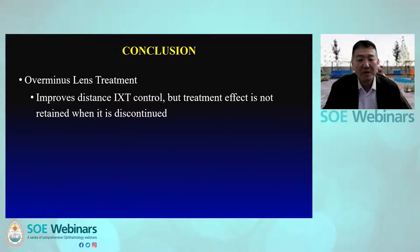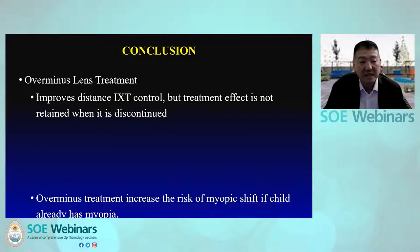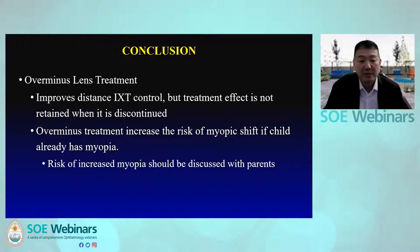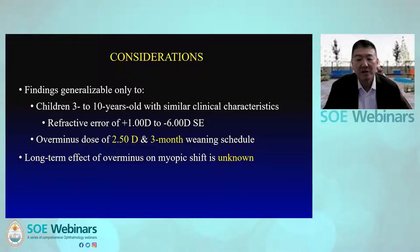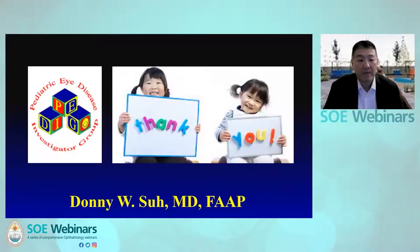In conclusion, over-minus lens treatment improves distance IXT control but the treatment effect is not retained once discontinued, and over-minus treatment significantly increased the risk of myopic shift if the child already had baseline myopia. The risk of increased myopia should be discussed with parents if over-minus correction is being considered. However, findings can only be generalized to children ages 3 to 10 sharing similar clinical characteristics as our cohort, using the same over-minus dose and weaning schedule. We also do not know whether the myopic shift found is permanent or temporary and are continuing to collect data in the extension phase of our study. Thank you.